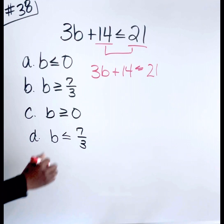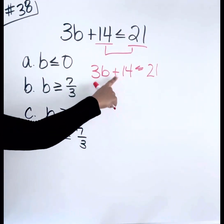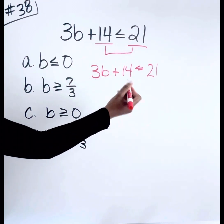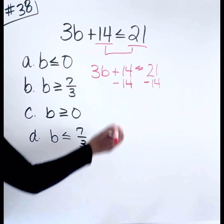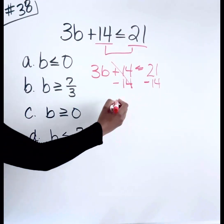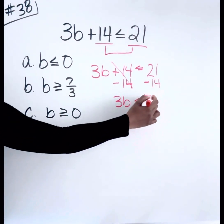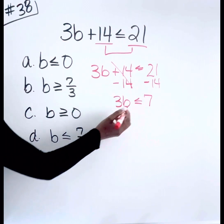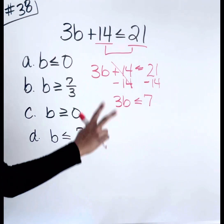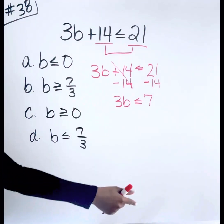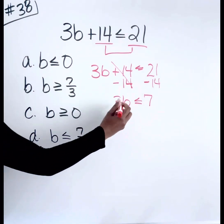We're going to move the 14 to the other side — always do the opposite of what you see. Since this is plus 14, we subtract 14 from both sides. Those cancel out; we bring down 3B, and 21 minus 14 gives us 7. Anytime I have a number and a variable joined together without a space, they've been multiplied together — they're married. So we do the opposite and divide — divorce them. We divide both sides by 3.